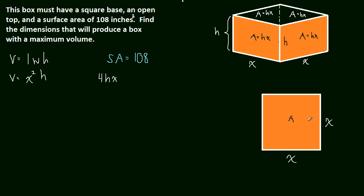So four sides with area h times x, and the base with area x squared. And there's no top, so we don't consider that. So four h x plus x squared, and this is equal to 108. The total surface area has to be exactly 108 inches. And now we have another equation that we can use to find h in terms of x.